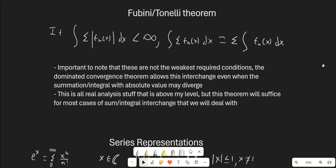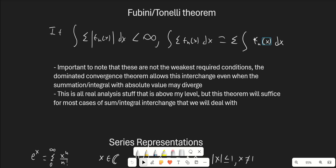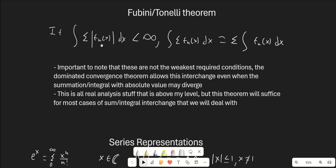Now let's talk about the Fubini/Tonelli theorem. This allows us to interchange the integral and the summation. However, there is one condition: if we replace our f_n of x with the absolute value of the sequence of functions, we require that this still converges and is less than infinity. All we have to do is throw on those absolute value bars and check whether it still converges. If it does, then you have this equality and you can interchange the sum and the integration.